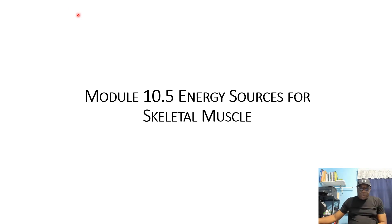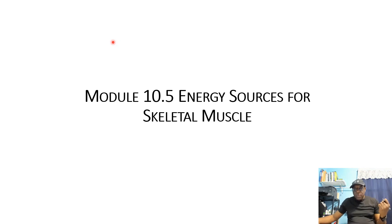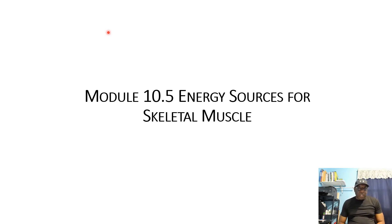Good evening. Today's topic: energy sources for skeletal muscles. We all know that muscles provide the power for movement of all sorts in the organism. This power has to come from somewhere. ATP, adenosine triphosphate, is the most common molecule for energy — it is literally called the energy currency for cells. The organelle mitochondria is where most ATP are produced, not all, but most.